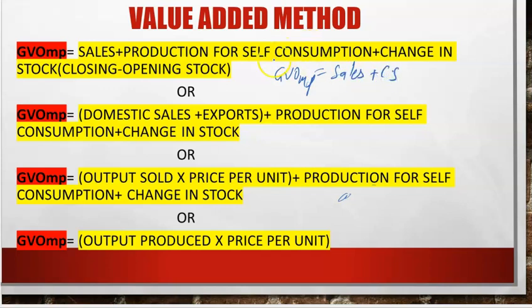But in a few questions, Self-Consumption is also given — Production for Self-Consumption — and if it is given, we also have to add it. But usually, Value of Output is calculated as Sales + Change in Stock. Change in Stock, as you all know, is Closing minus Opening.